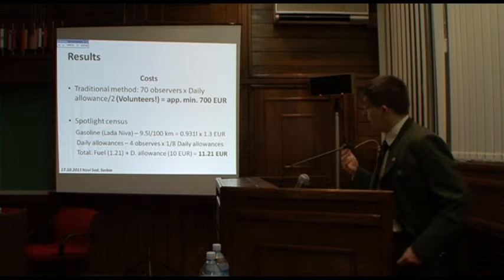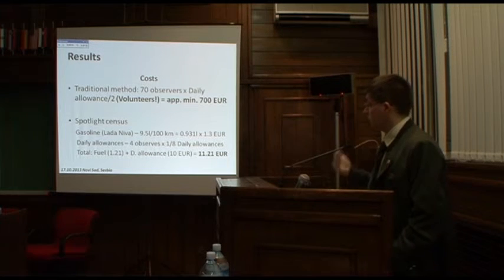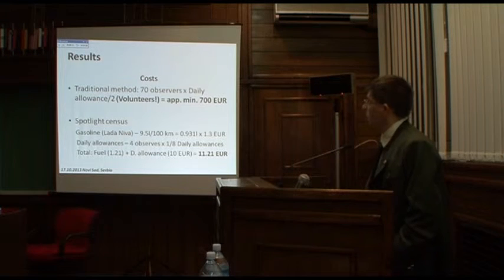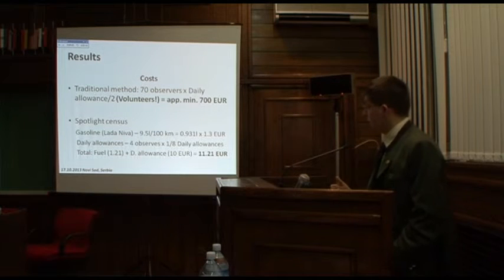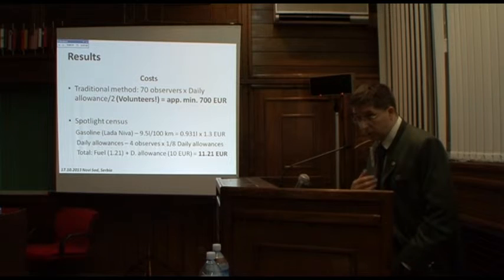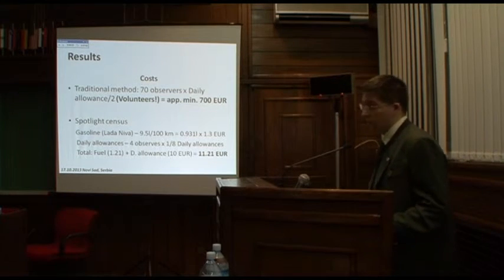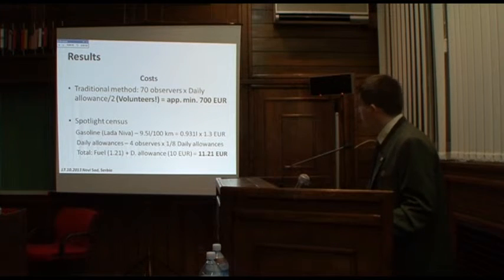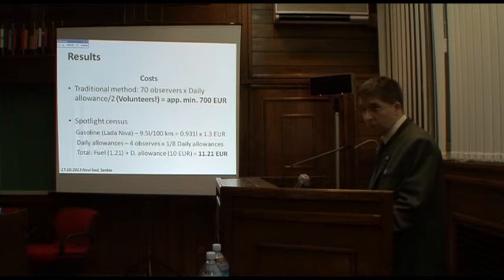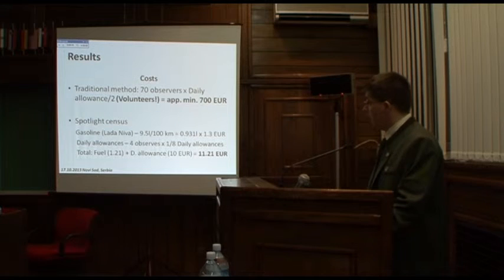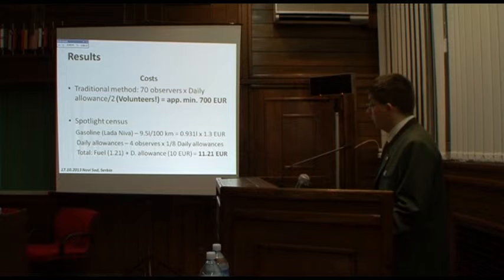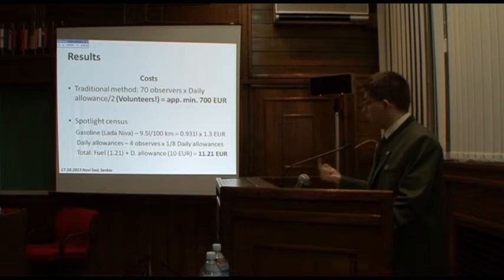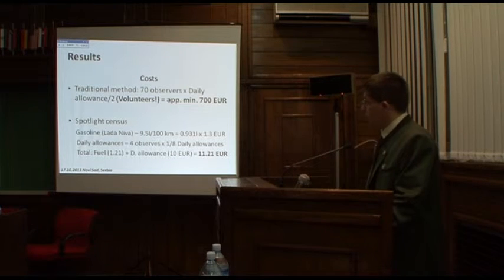Regarding costs, we calculated daily allowances for observers. Although the hunters volunteered for the traditional census, applying the principle that time is money, this method would cost at least 700 euros per day. For the spotlight census, we calculated fuel costs based on mileage plus observer allowances, estimating one spotlight census run at 11 euros — and with three repetitions, the total cost was only 33 euros.